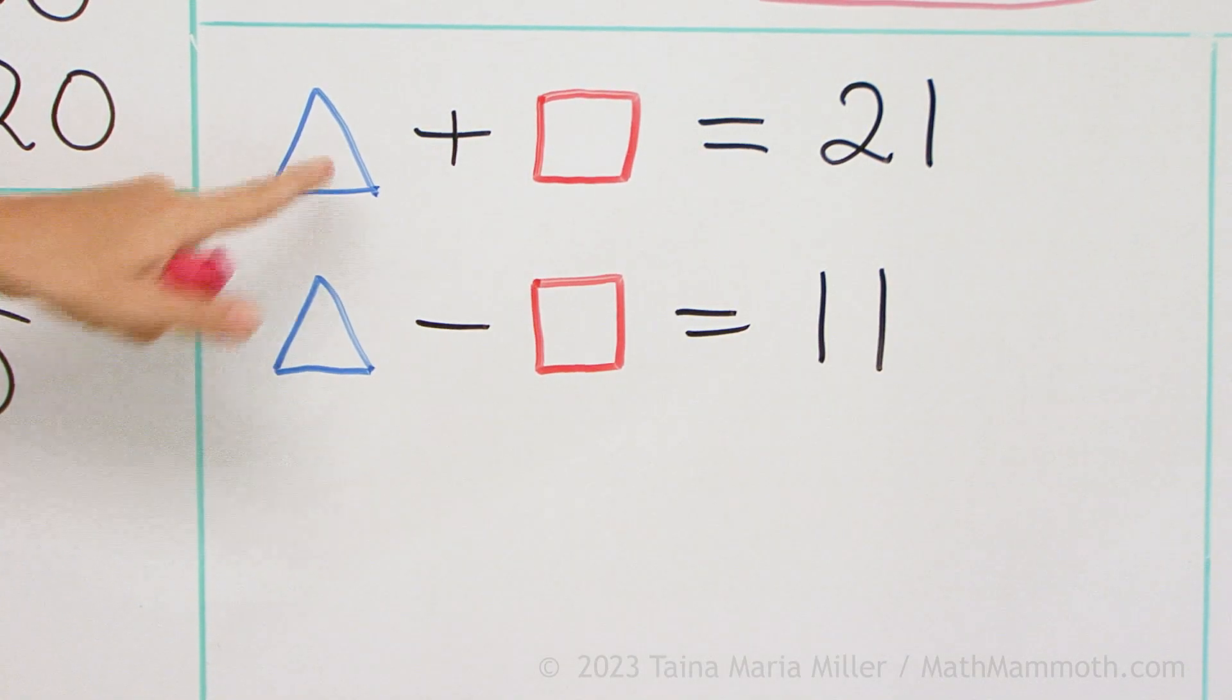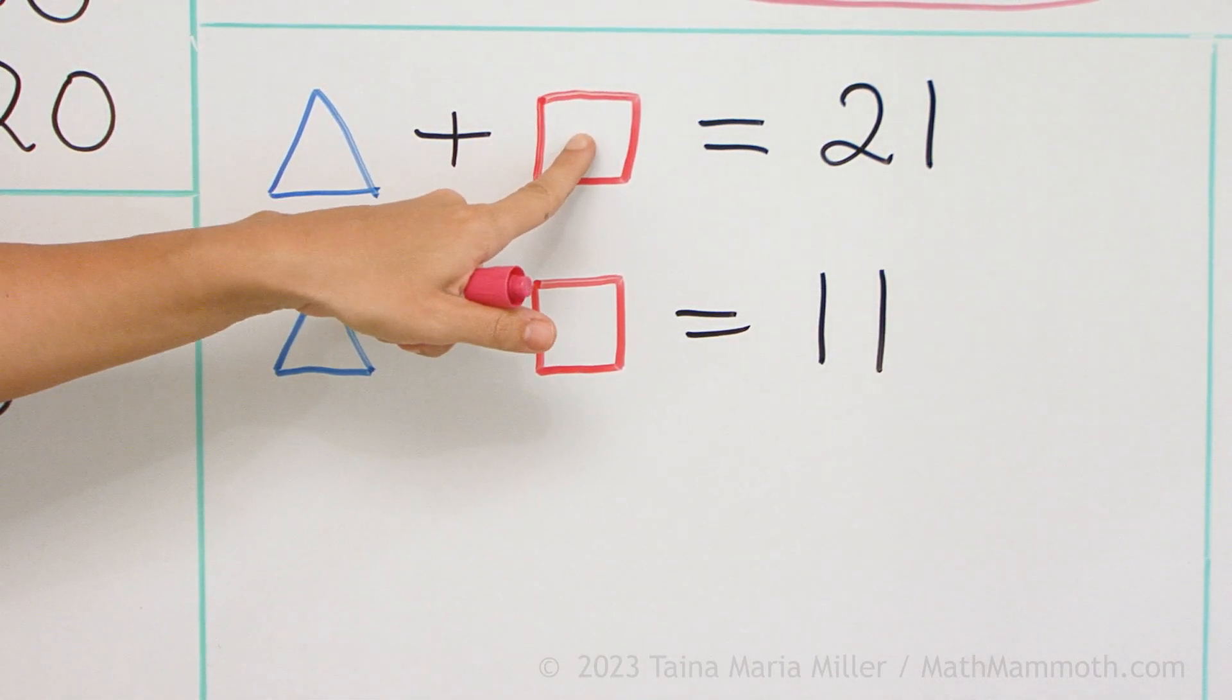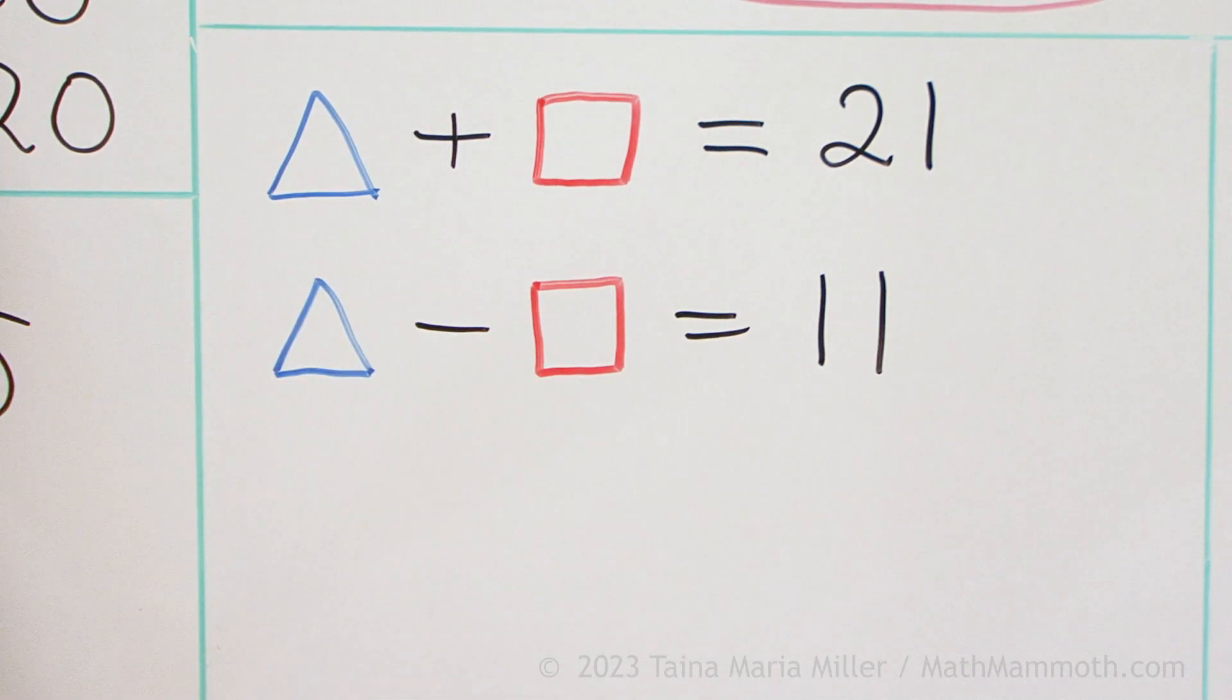This is an unknown number, this triangle, and this is another unknown number. So there's two unknown numbers for us to solve.